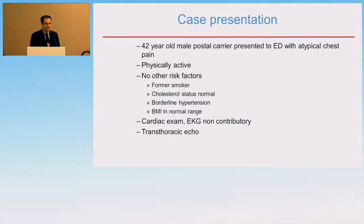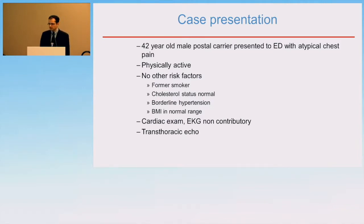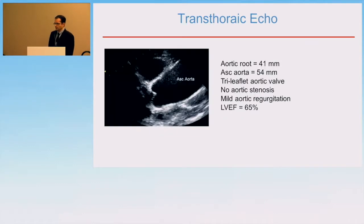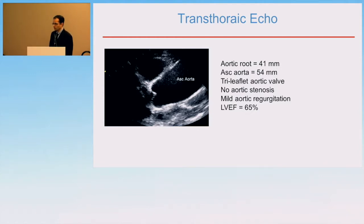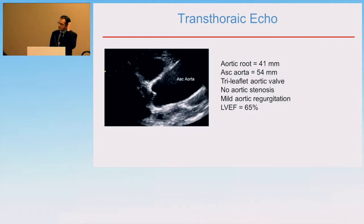We'll start with a case presentation that's fairly generic. A gentleman in their 40s presents with atypical chest pain, no significant risk factors except for a remote smoking history, a little bit of hypertension. Because of this atypical chest pain, they undergo a transthoracic echo. This echo shows dilatation of the ascending aorta at 54 millimeters, aortic root at 41 millimeters, a tri-leaflet aortic valve, no significant valvular disease, and normal ejection fraction. We're now asked to make a decision on whether this patient needs intervention or not.